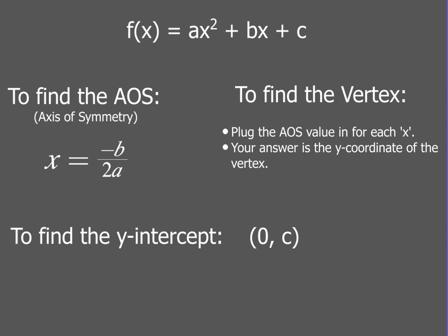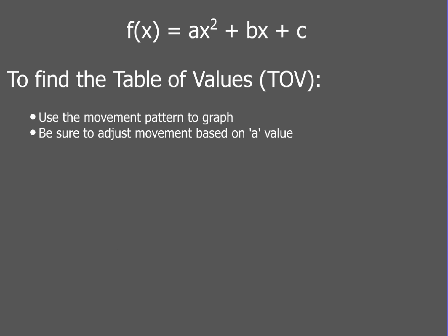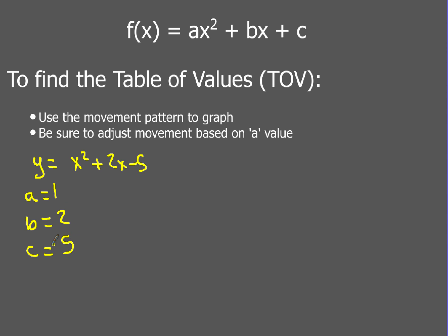Now let's look at finding the table of values. Finding a table of values is going to be very similar to what we've already worked with before. Say we have the equation y equals x squared plus 2x minus 5. My A value would be 1, B would be 2, and my C value would be negative 5. This tells me two things: my A value tells me that my parabola is going to open up — it's gonna look like a big smiley face, opening up.